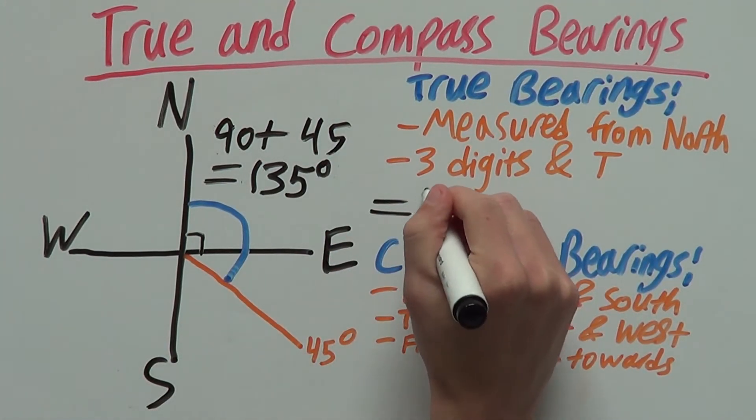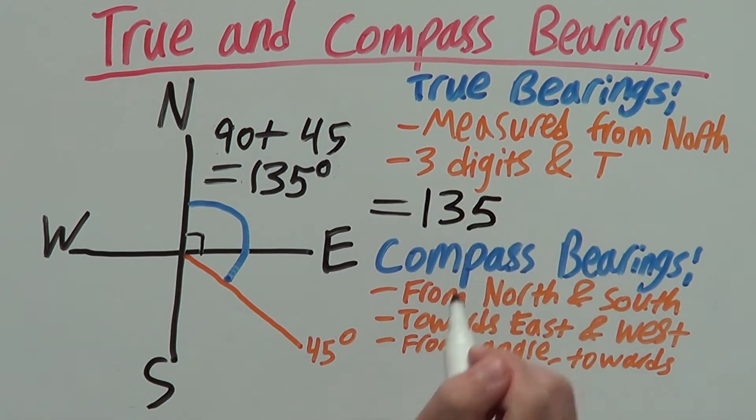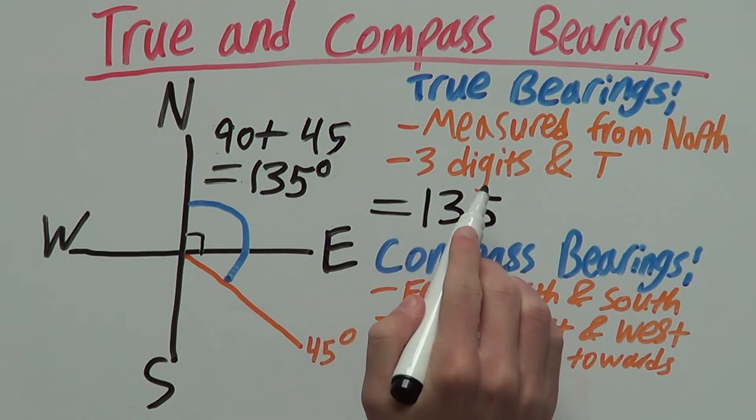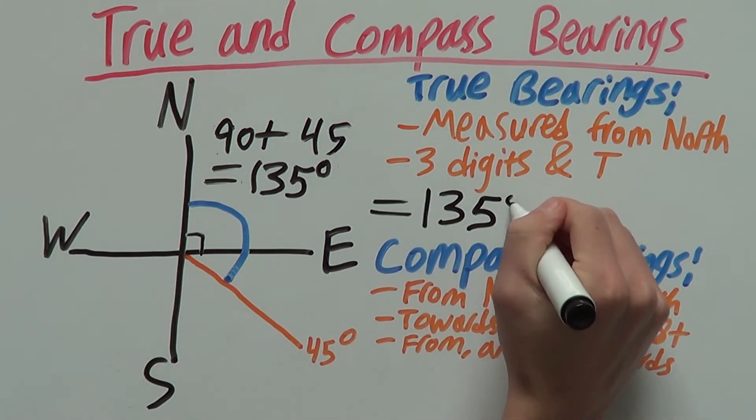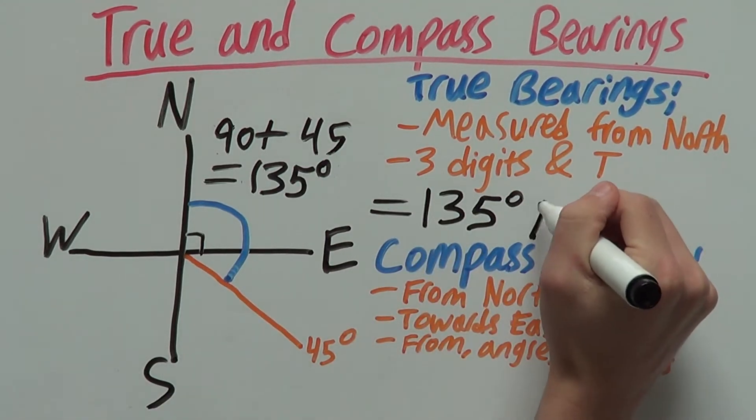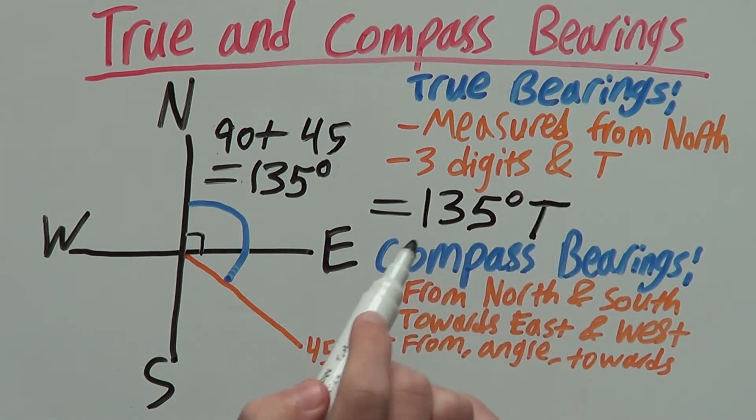So our true bearing is 135 degrees. There's our three digits. Don't forget your degree sign, and at the end, you also need that capital T.